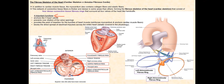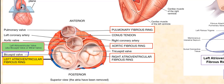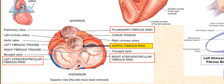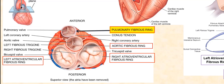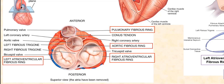The cardiac skeleton has four important functions, which include the anchoring of the valves of the heart. The left atrioventricular fibrous ring surrounds and anchors the left atrioventricular valve, also known as the bicuspid or mitral valve. The right atrioventricular fibrous ring surrounds and anchors the right atrioventricular valve, also known as the tricuspid valve. The aortic fibrous ring surrounds and anchors the aortic semilunar valve, also known as the aortic valve. And the pulmonary fibrous ring surrounds and anchors the pulmonary semilunar valve, also known as the pulmonary valve. So the names of these four fibrous rings correspond to the four valves of the heart that they surround.